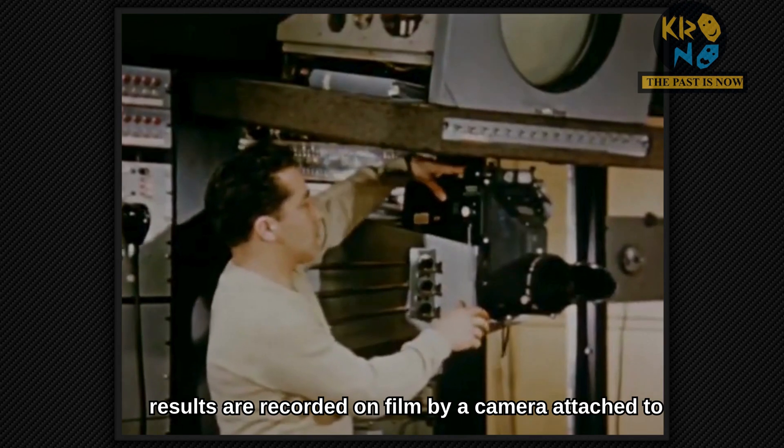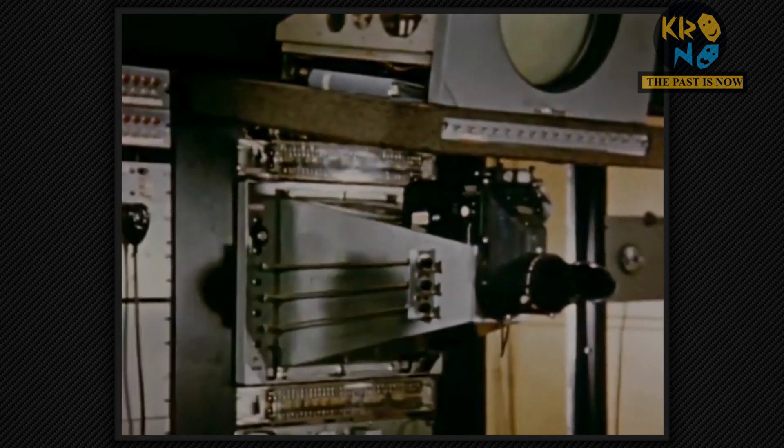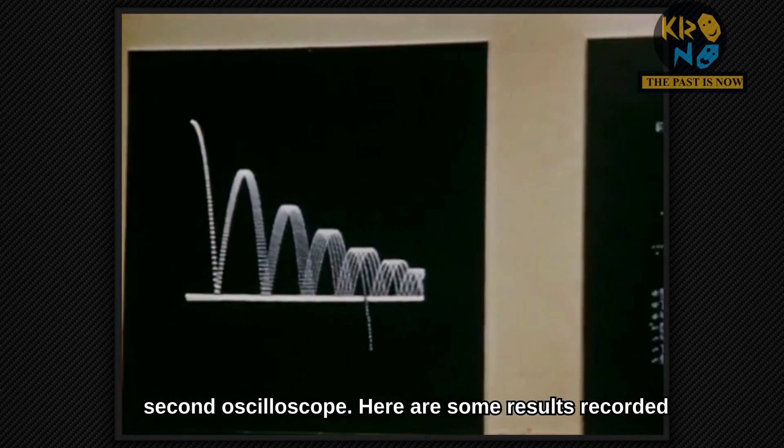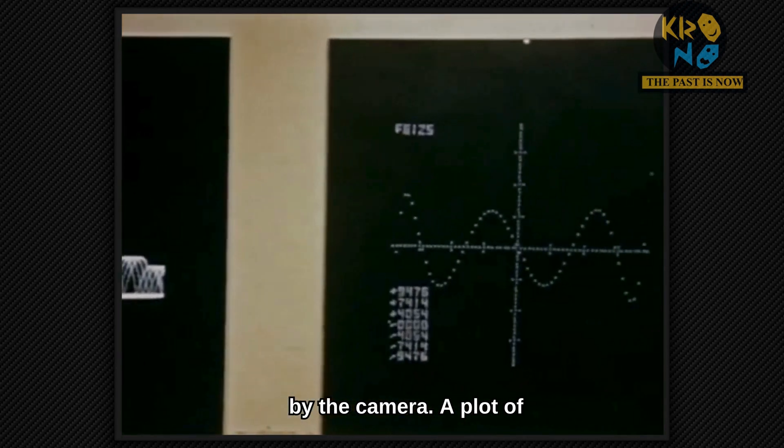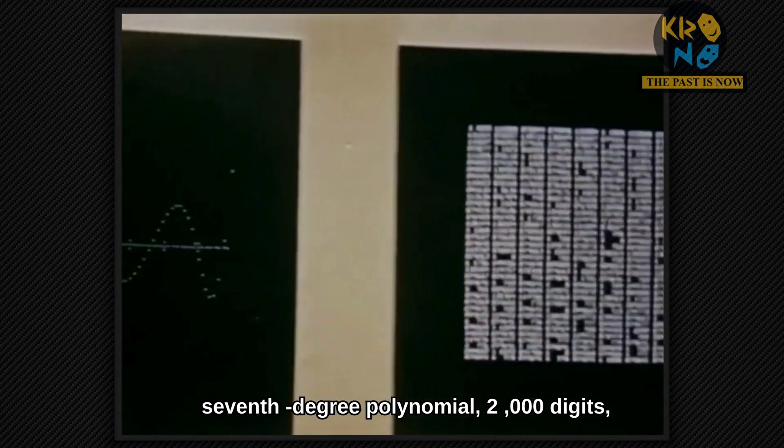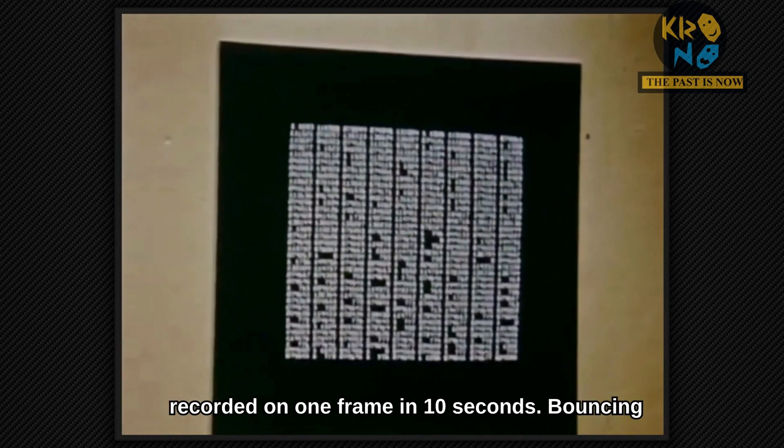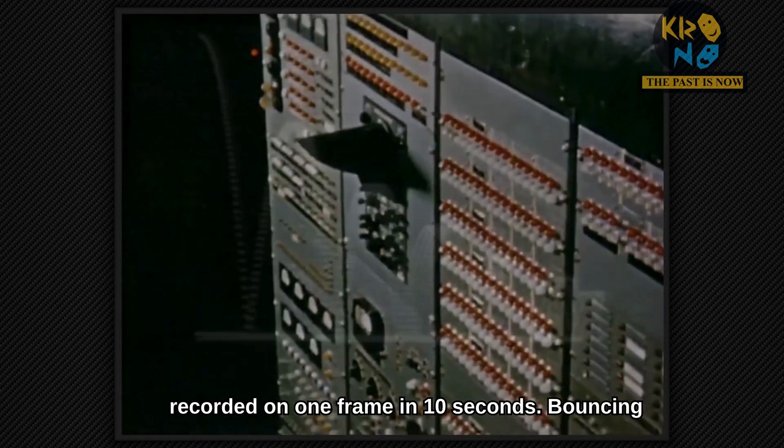Plotted results are recorded on film by a camera attached to a second oscilloscope. Here are some results recorded by the camera. A plot of a 7th degree polynomial. 2,000 digits recorded on one frame in 10 seconds.